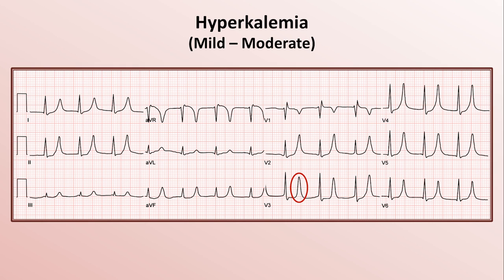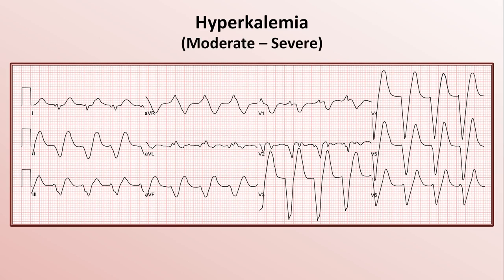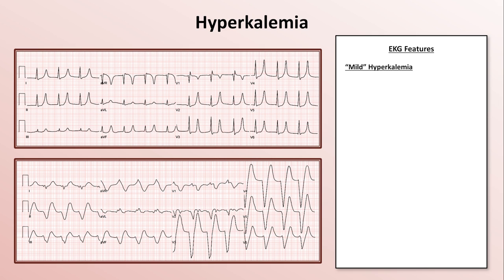In the case of this EKG, it suggests mild to moderate severity, while returning to the first EKG, this is a person with moderate to severe hyperkalemia. When mild, we see the aforementioned peaked T waves, but there is a distinctive feature beyond just their height — they are narrow-based, almost as if someone squeezed the base of the T wave and the top shot up in response. This contrasts with hyperacute T waves in the first minutes of an acute MI, which can be equally tall but are unusually wide-based. Due to the prominence of the T waves, many EKG machines double count the heart rate, so if the patient's heart rate is actually 70, the machine might report it as 140, mistaking the T waves for QRS complexes.